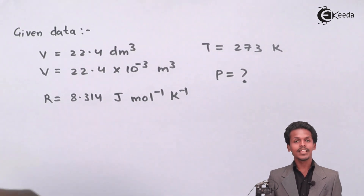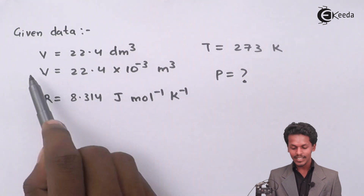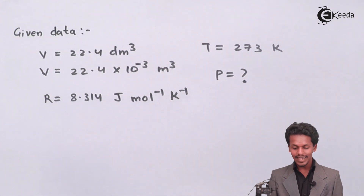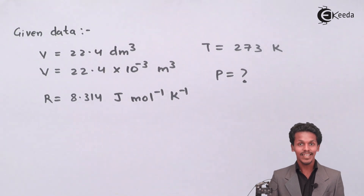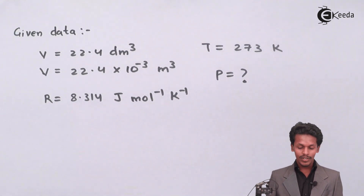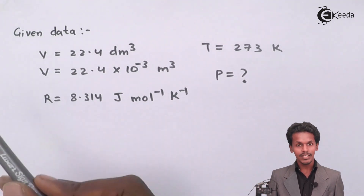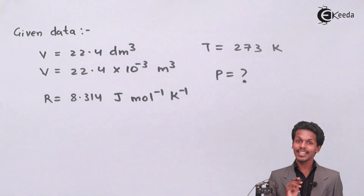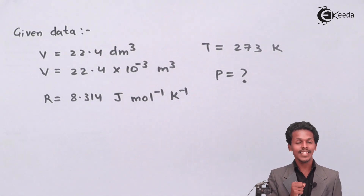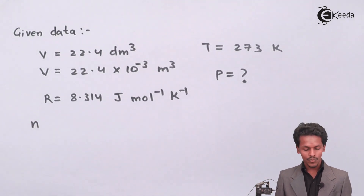This joule is equivalent to Newton·meter, which is related to the volume in cubic meters — that is why we take R = 8.314. This value of R would typically be given in an exam, but if not, you can derive it from your previous lecture. Now, we have P, T, R, and V, but we still need n. Since there are two gases in the tank, we calculate the moles of each separately and then add them, as both occupy the same volume of 22.4 dm³.